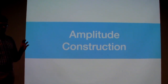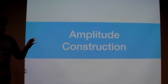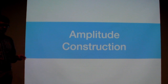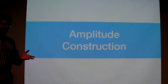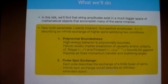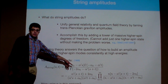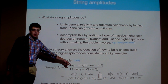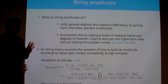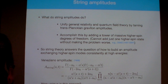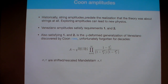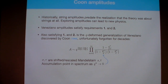Just to give a spoiler: string amplitudes exist in a much bigger space of mathematical objects that accomplish many of the same miracles. In particular, I'll derive a new multi-parameter space of four-particle amplitudes that are Lorentz invariant and describe the infinite exchange of higher spins, satisfying two conditions. Number one is polynomial boundedness — the high-energy behavior is well-behaved, satisfying either Regge or Froissart, depending on whether you're talking about fixed momentum exchange or high energy fixed angle scattering.